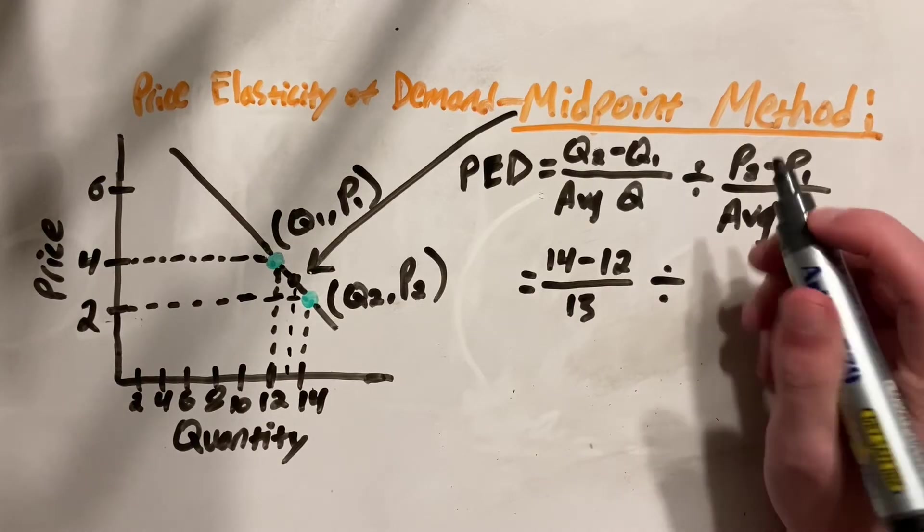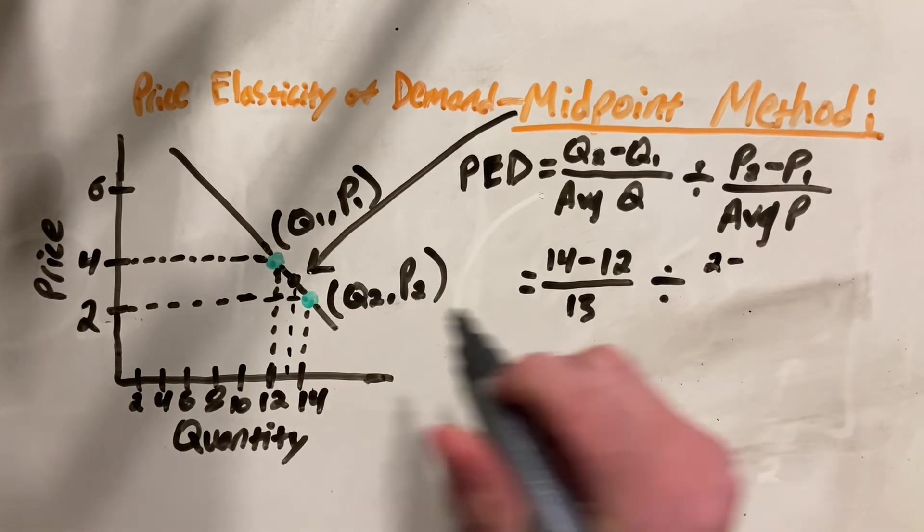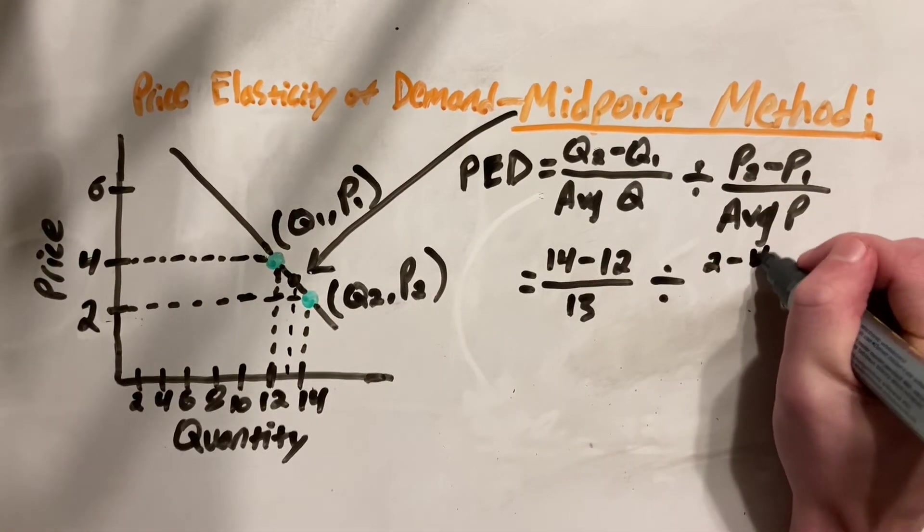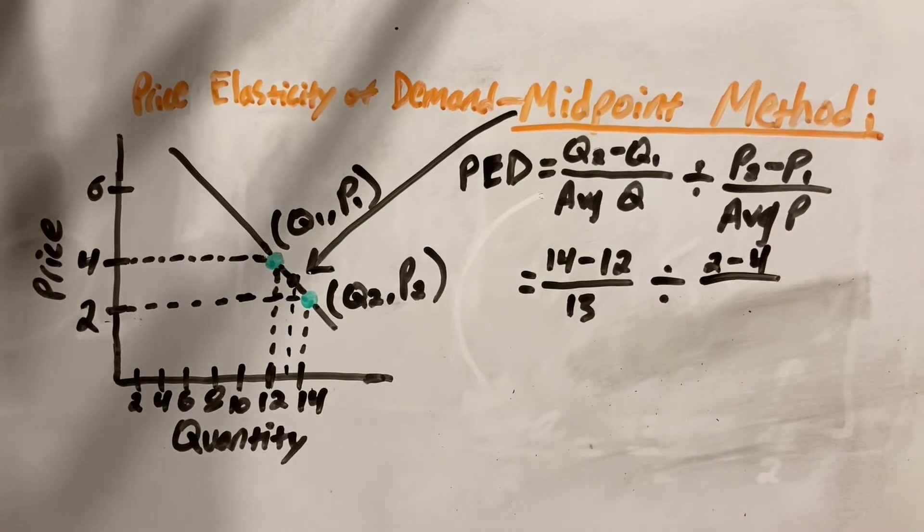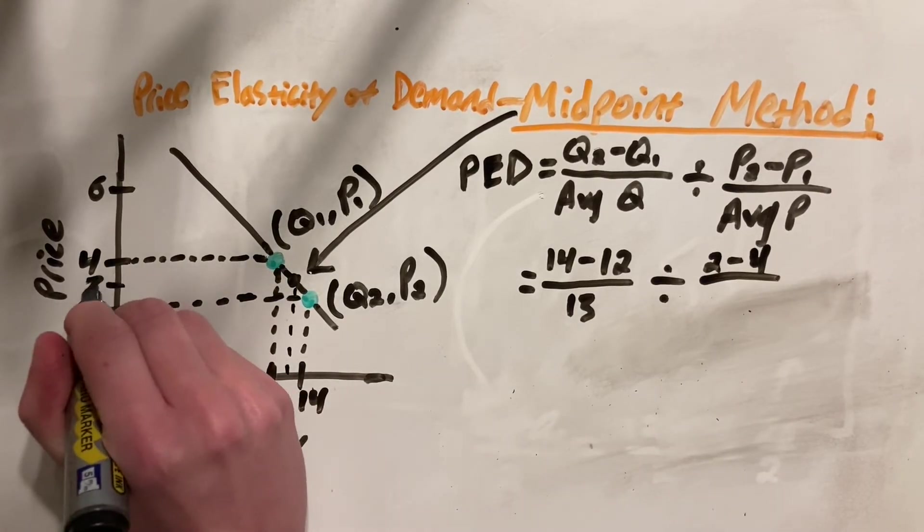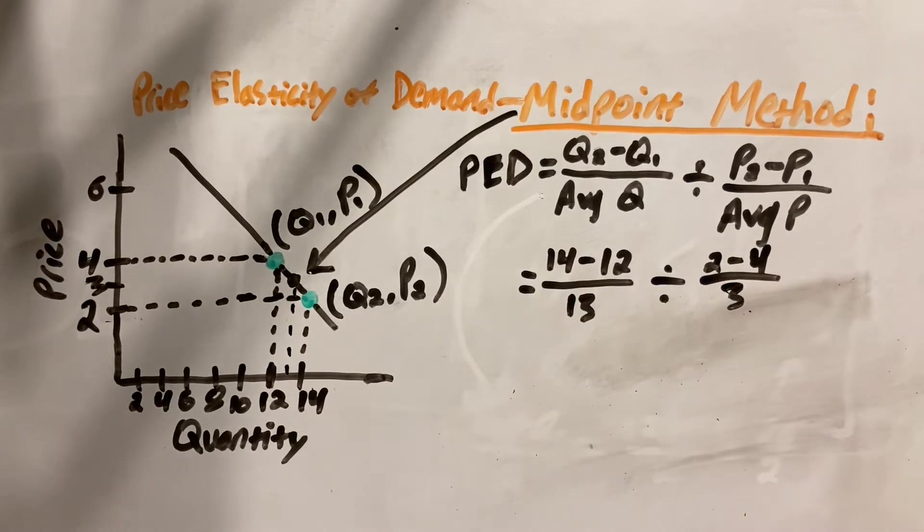We have P2, which if we go to the price side of our demand supply diagram, that is 2 minus P1, which is 4. And then we have our average, so right between those is 3.